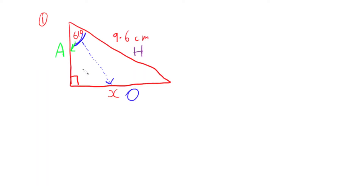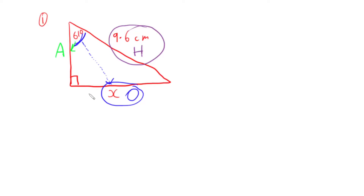Now that I've labelled my triangle, I can identify which sides I have information about and decide which rule I need. I have my opposite side — it's X, my unknown. I've got my hypotenuse at 9.6 centimetres. I do not have my adjacent side. So I need the ratio that has opposite and hypotenuse in it.